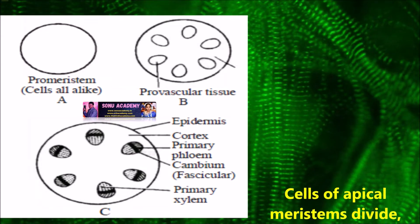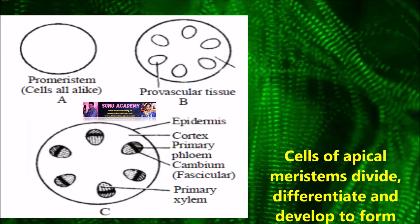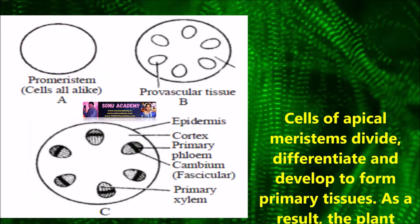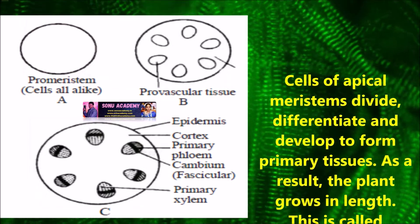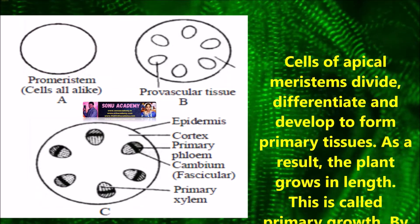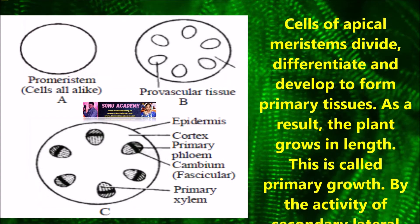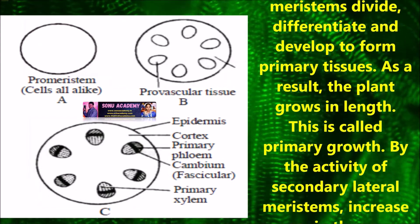Now let us discuss about secondary growth. Cells of apical meristem divided, differentiated and developed to form primary tissues. As a result, the plant grows in length. This is called primary growth.